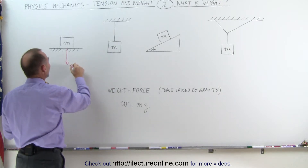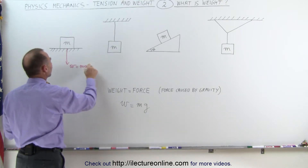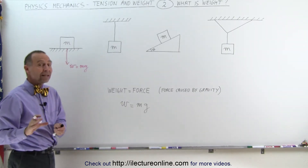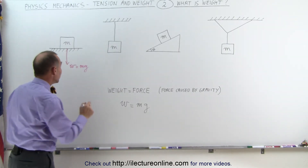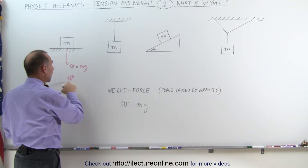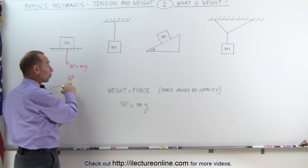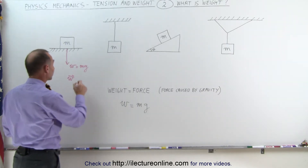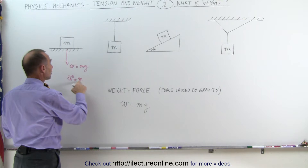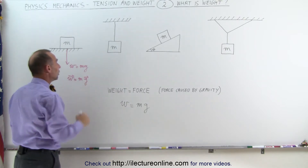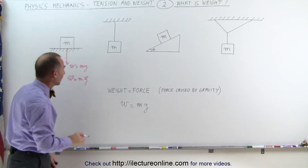So we have weight equal to m times g. If you want to write it as a vector quantity, weight with a little arrow on top — because it's a vector quantity with both magnitude and direction — is equal to the mass of an object, which is a scalar, times the acceleration due to gravity, which is also a vector.